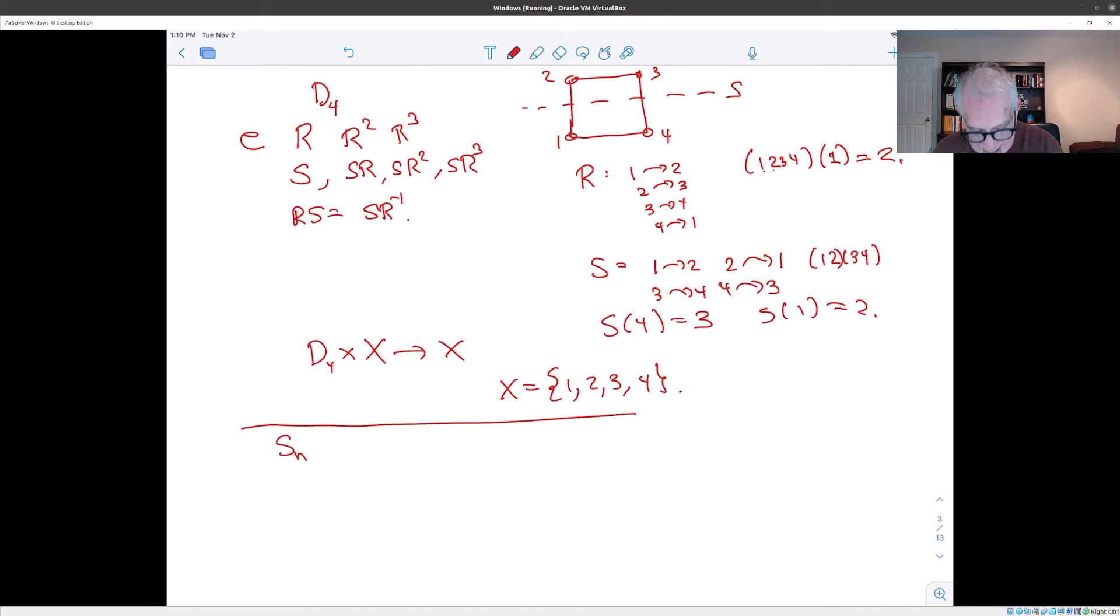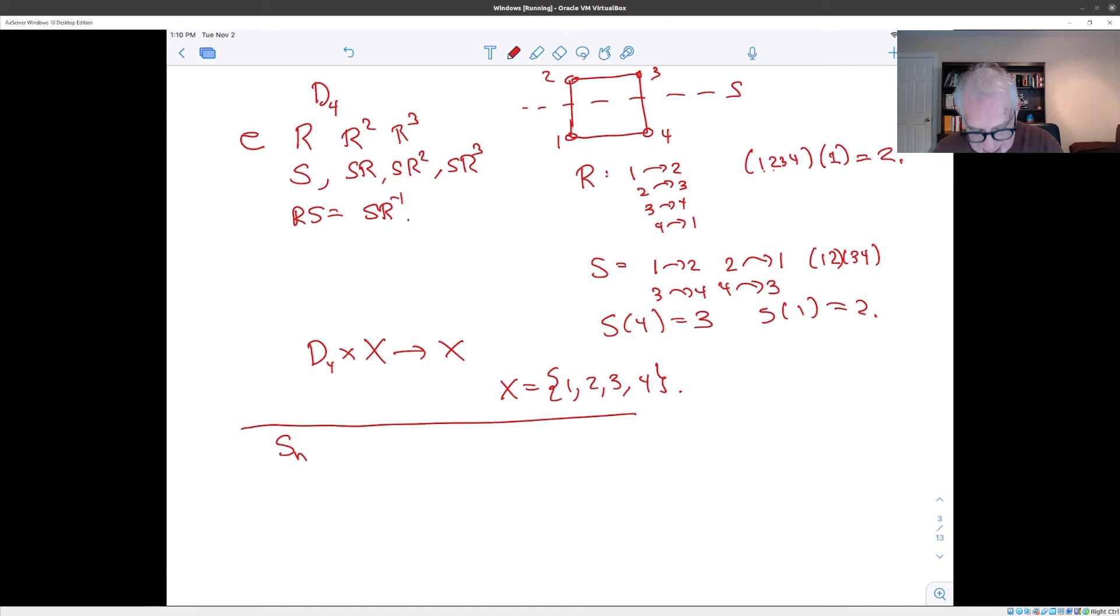And this is really just a special case of the set S_n, the permutation group, the full permutation group S_n, acting on the set {1, ..., n}. Because remember, a permutation sigma in S_n is a function from {1, ..., n} to {1, ..., n}. And so we can define the pairing sigma j. So this is in X, which is the set {1, ..., n}. And this is in S_n to just be what you get if you evaluate the permutation at j. So